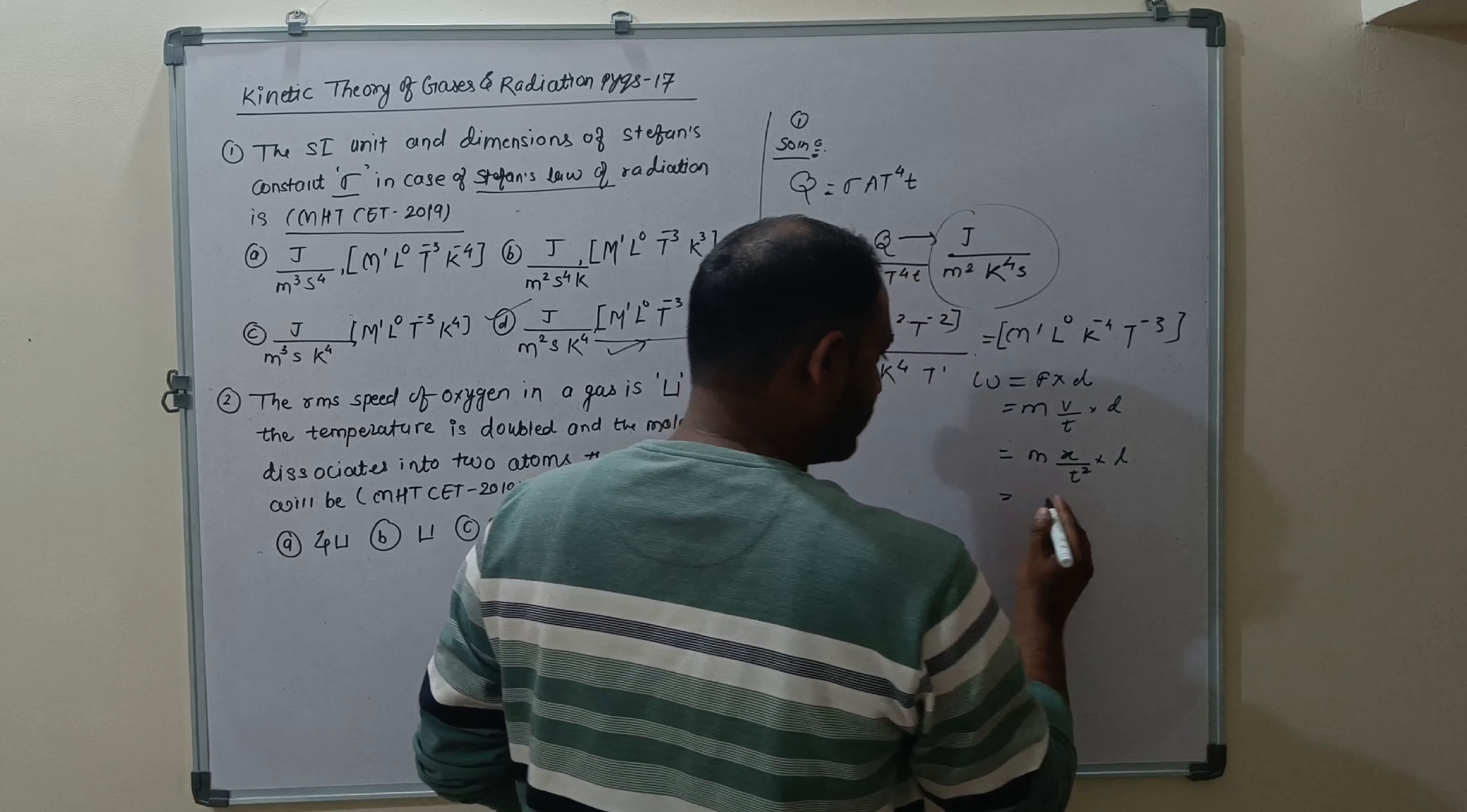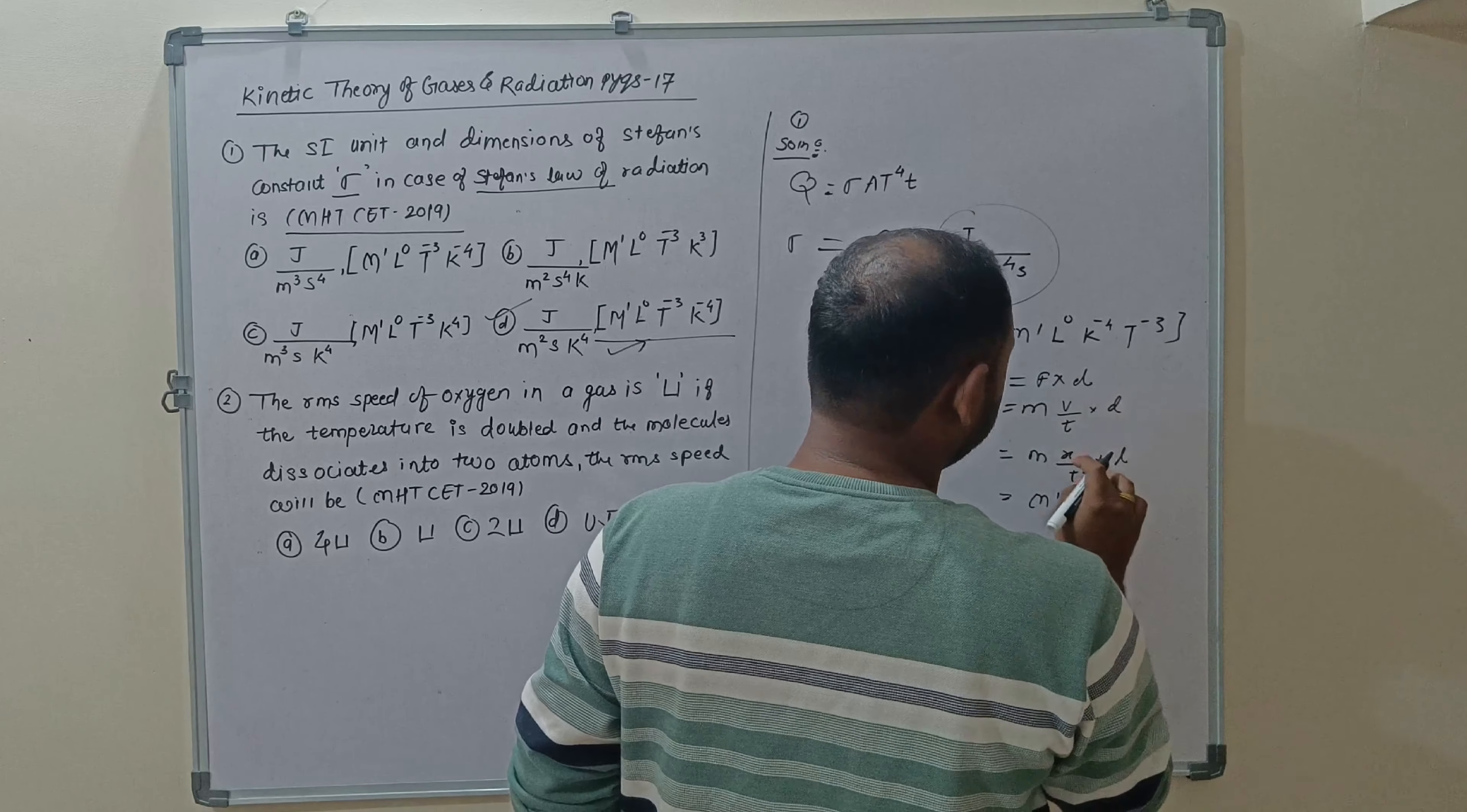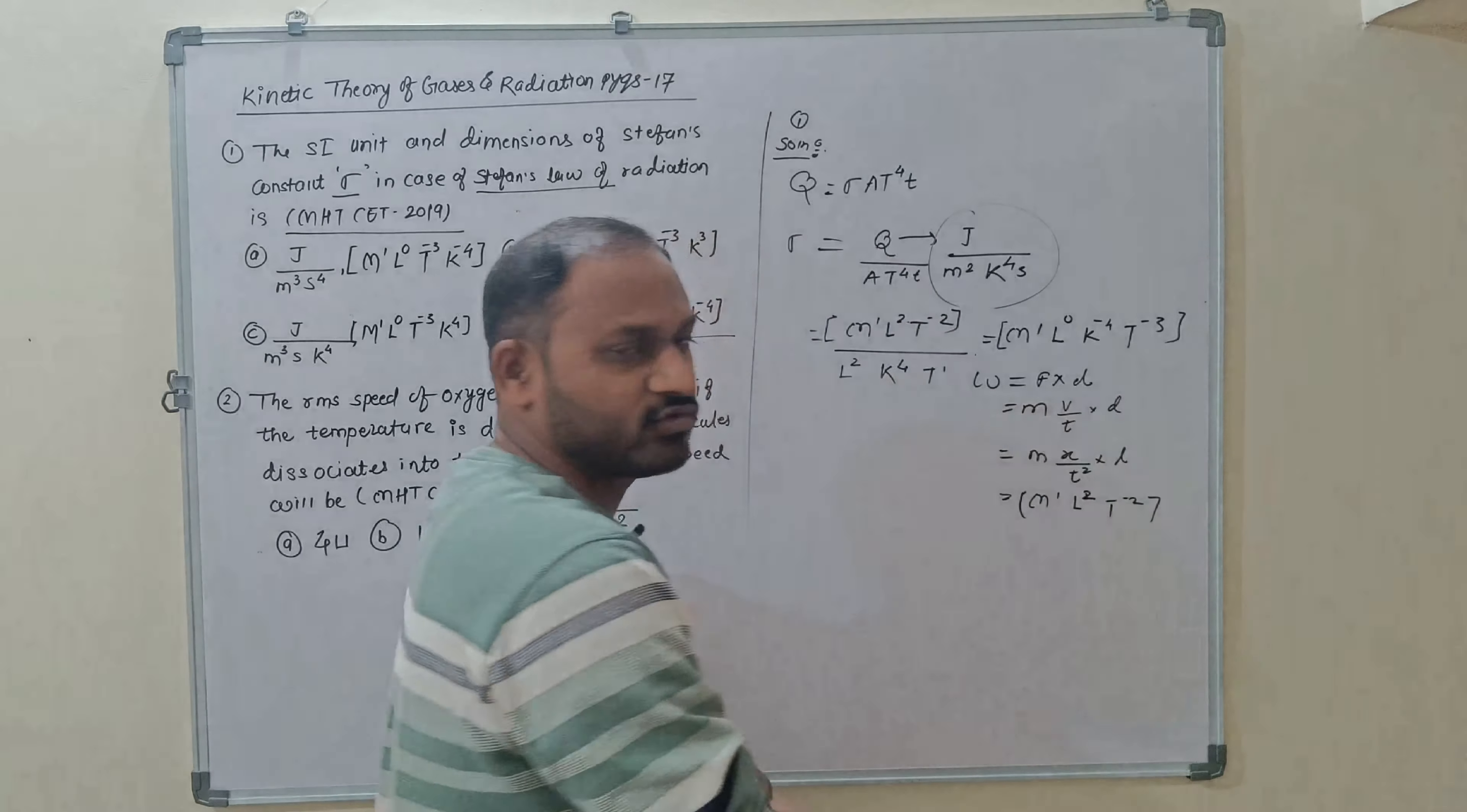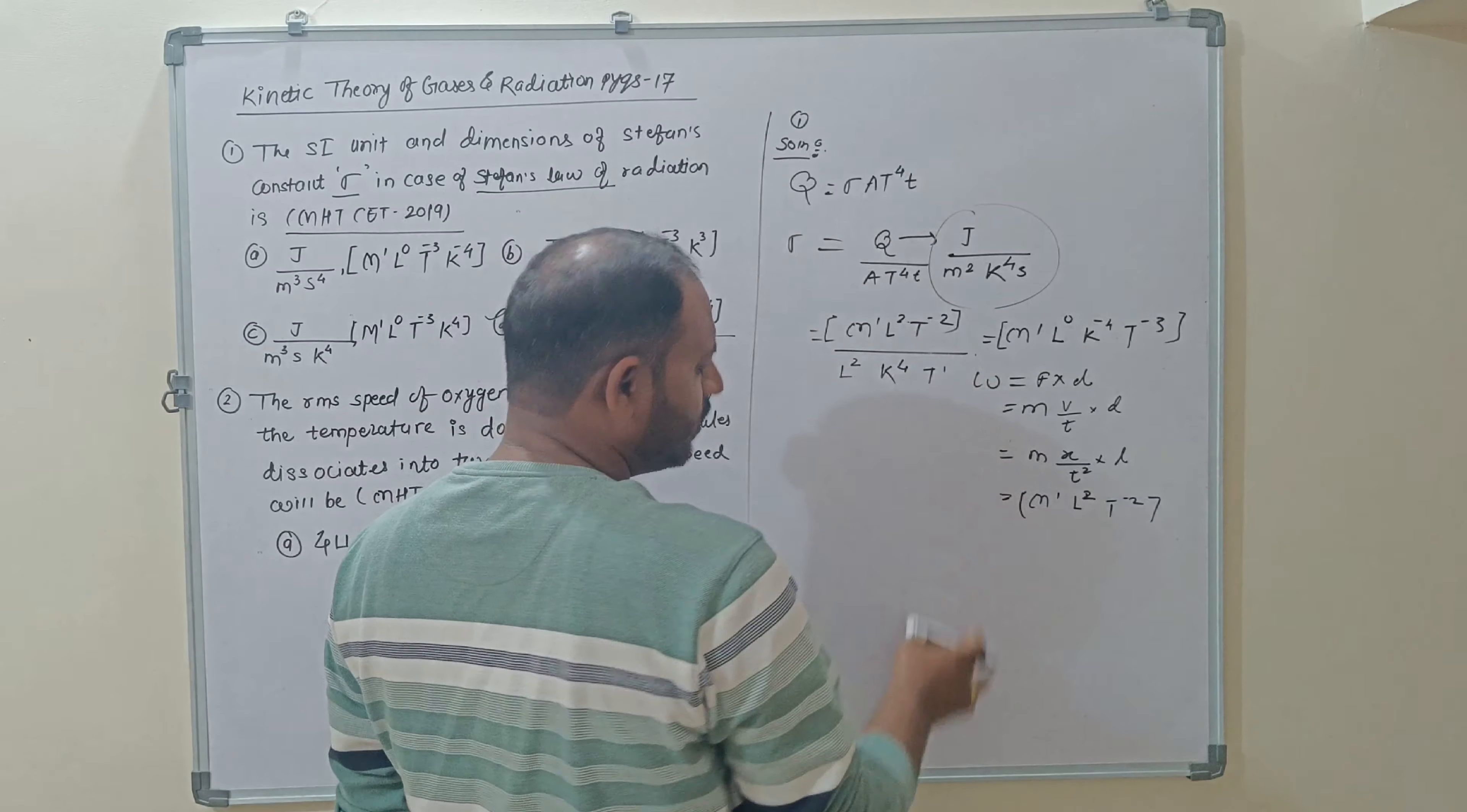Force is mass into acceleration, but acceleration is velocity per unit time into displacement. Therefore mass velocity squared displacement upon time. M1 displacement L1, displacement L1, L2, T power minus 2.